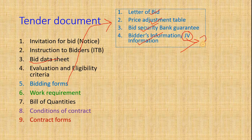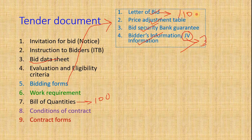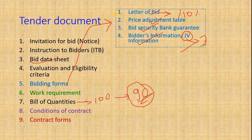The Letter of Bid contains the format where bidders declare how much percentage discount they will offer on the BOQ price. For example, if the BOQ price is 100 and they offer a 10% below-BOQ discount in the Letter of Bid, then the actual contract price would be 90. The Letter of Bid also contains other conditions, such as a declaration that they have not been declared ineligible by any government offices, and what the bidding amount is.